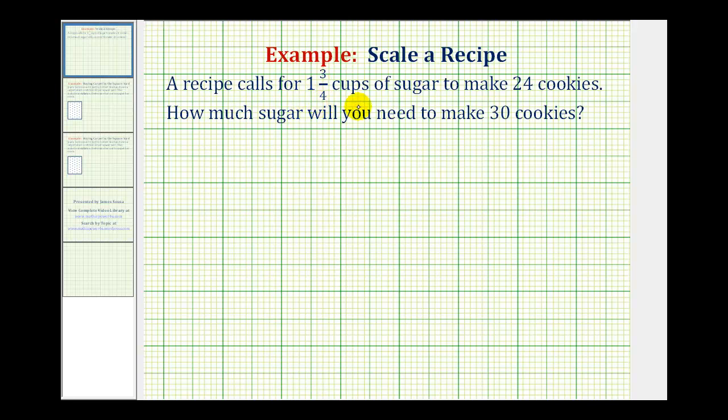A recipe calls for one and three fourths cups of sugar to make twenty-four cookies. How much sugar will you need to make thirty cookies? To solve this problem we're going to use a proportion comparing the amount of sugar to the number of cookies.